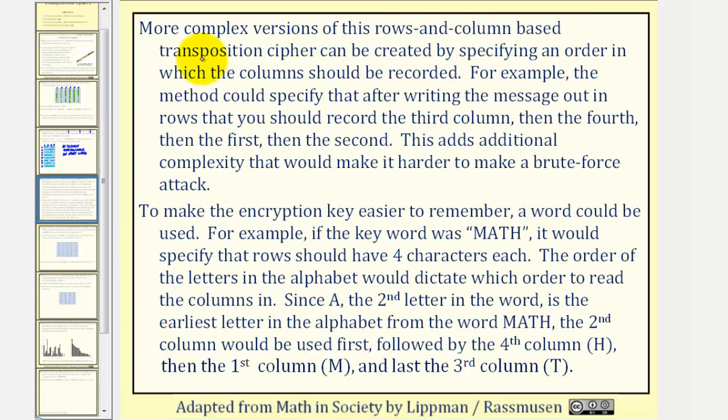More complex versions of this rows and column based transposition cipher can be created by specifying an order in which the columns should be recorded. For example, the method could specify that after writing the message out in rows, that you should record the third column, then the fourth column, then the first, then the second. This adds additional complexity that would make it harder to make a brute force attack.